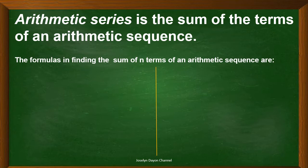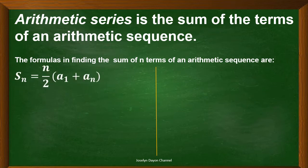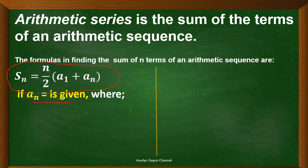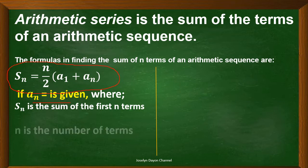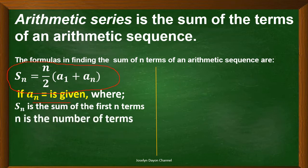The formulas in finding the sum of n terms of an arithmetic sequence are: first, S sub n equals n over 2 times the quantity of A sub 1 plus A sub n. We will be using this formula if A sub n, or the last term, is given. Here, S sub n is the sum of the first n terms, and n is the number of terms.